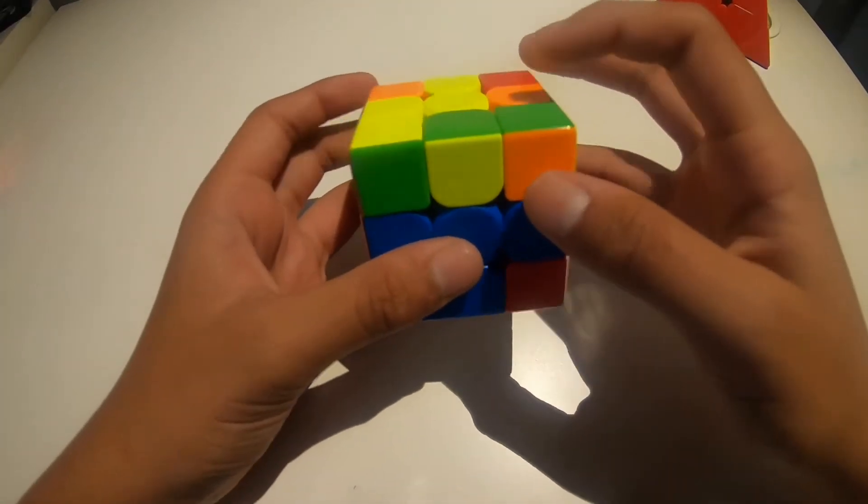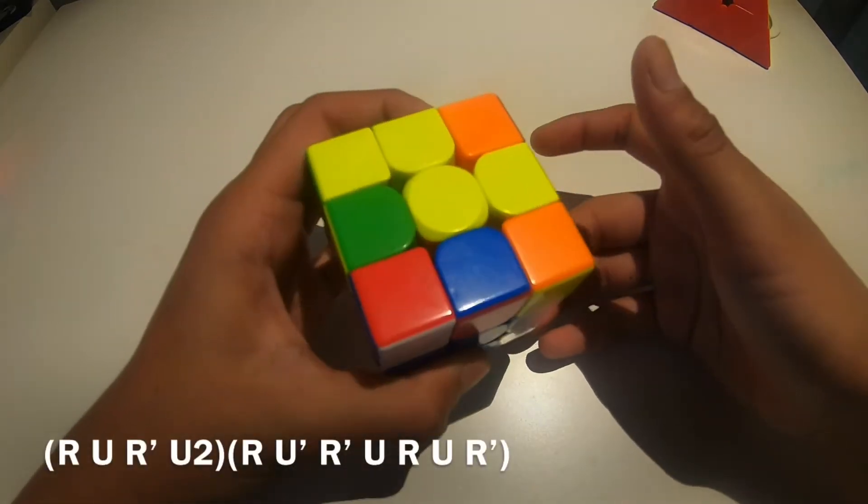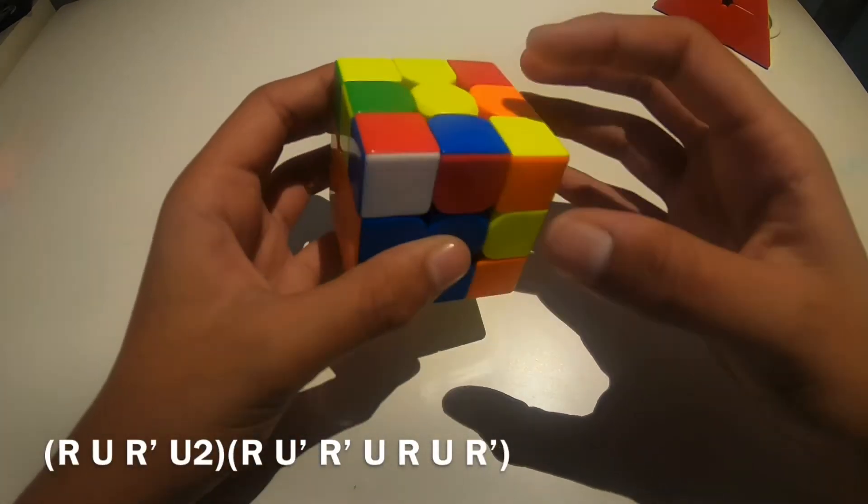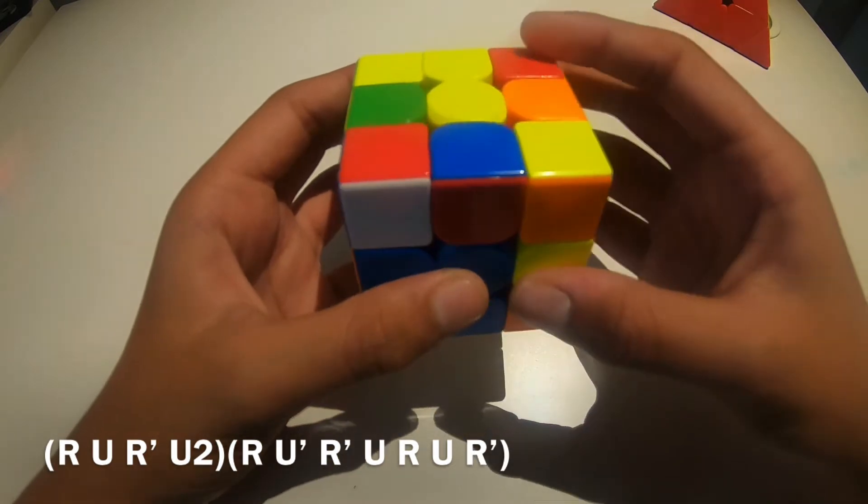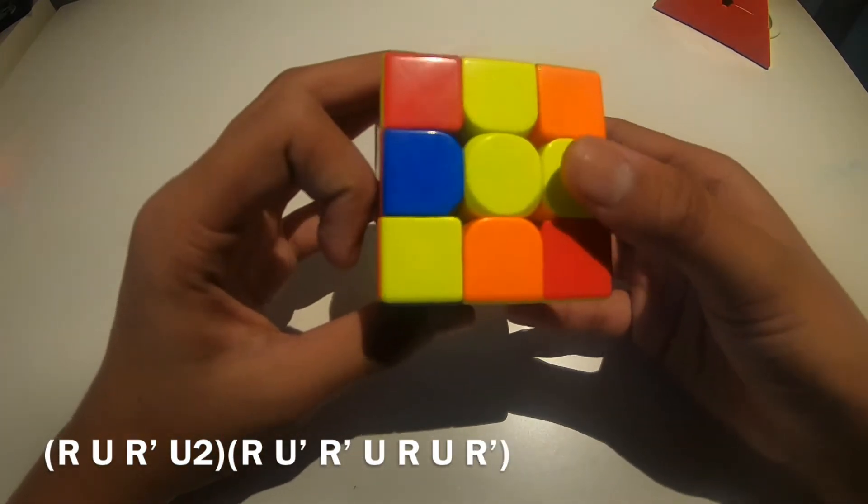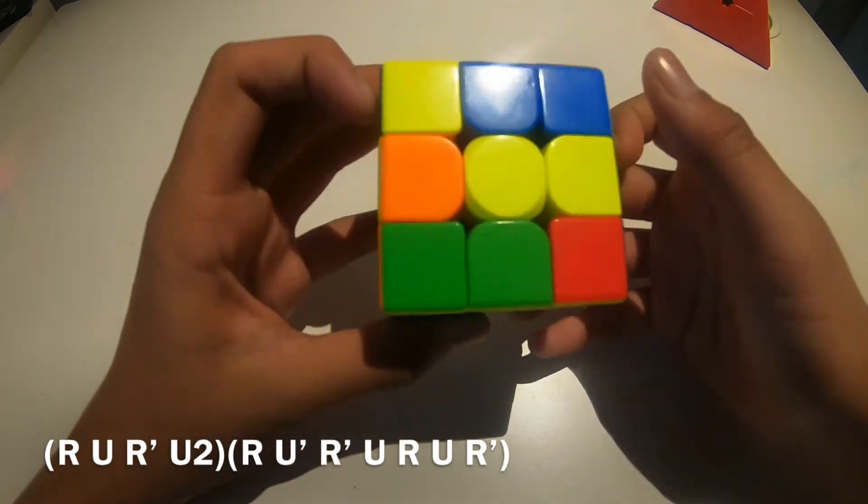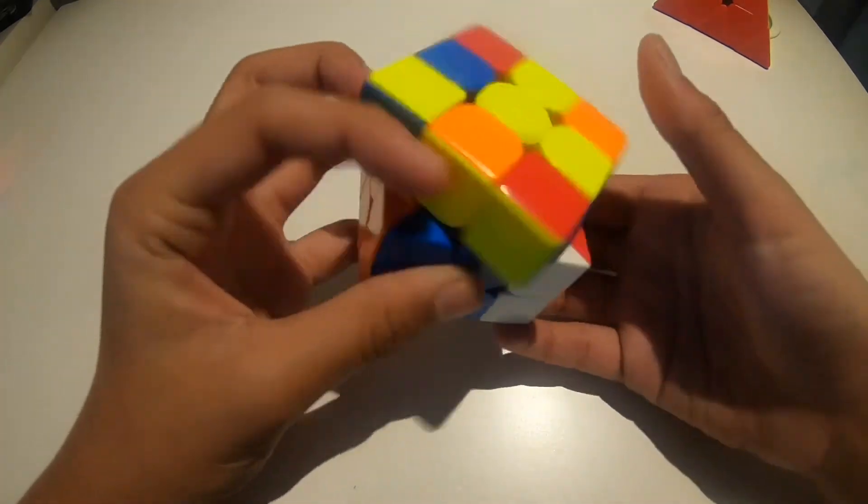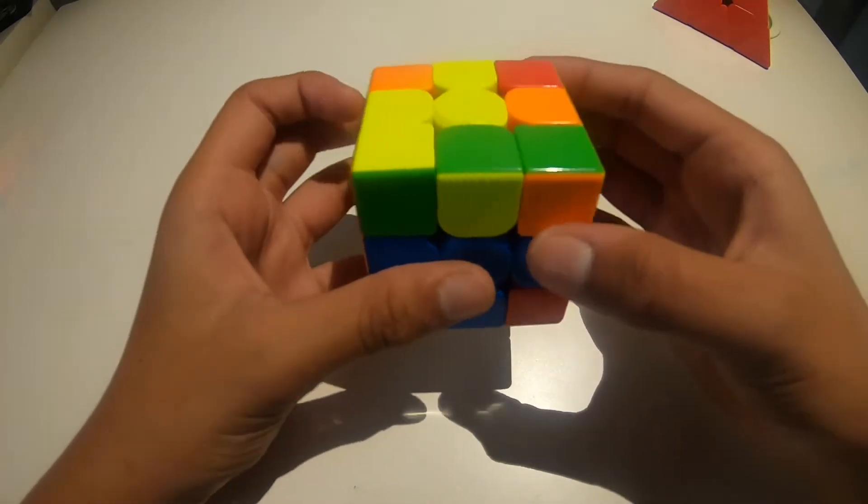The other way is to do R U' R' to create this case. And then you can do U2, then R U' R' to pair them up and then insert. So, all together it will look like this.